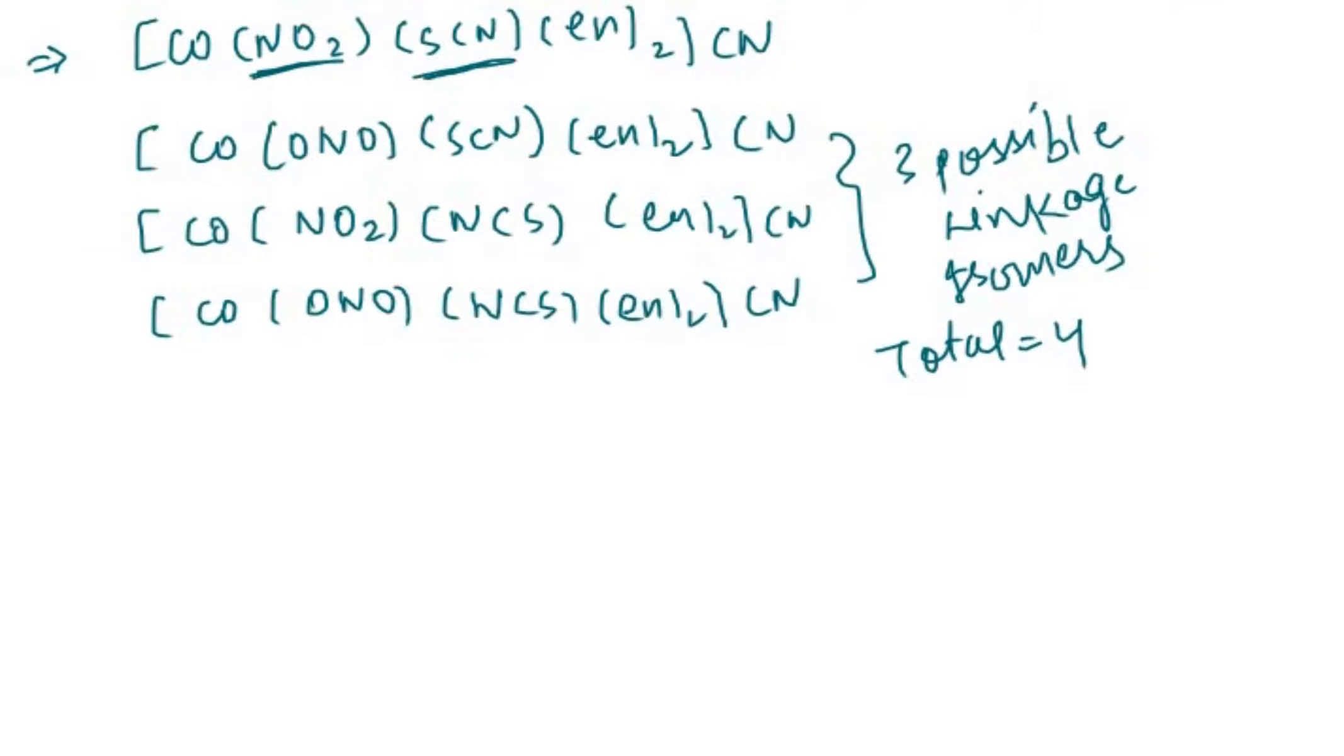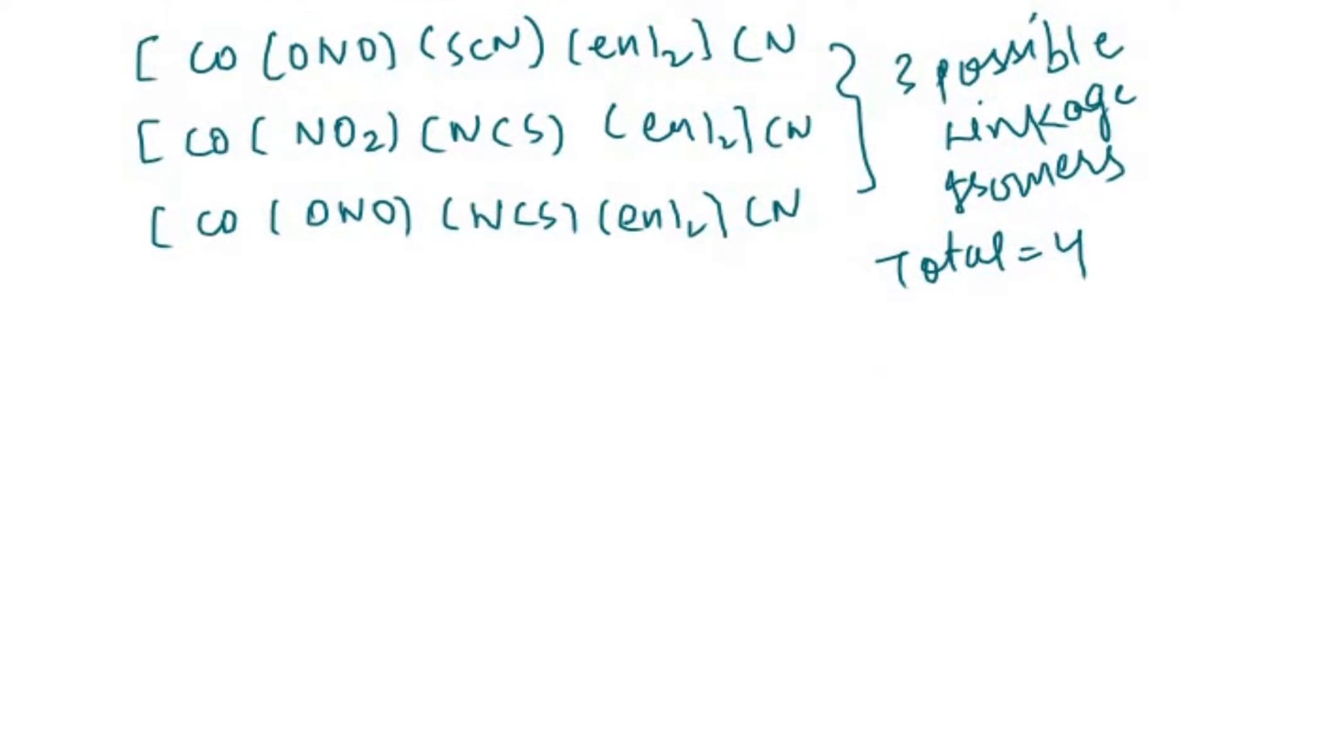For understanding a little bit more deeply, let's take one more example. Here we have chromium SCN, ammonia 5, and the negative coordination sphere is ZN(CN)4.